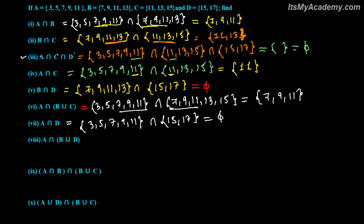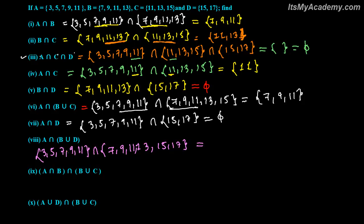Now A intersection with B union D. A has 3, 5, 7, 9, 11. B union D means all elements of B and D: B gives 7, 9, 11, 13, and D gives 15 and 17. So B union D is {7, 9, 11, 13, 15, 17}. Common between A and B union D: seven, nine, eleven are in A and in B union D. Three and five are not in B union D. So the answer is {7, 9, 11}.